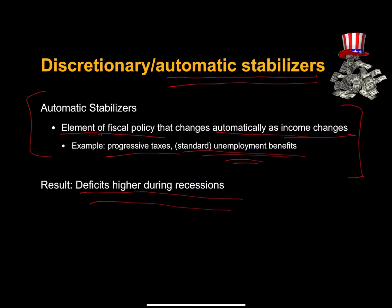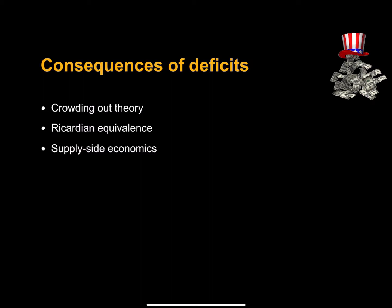Coupled with discretionary policy, our deficits can get quite high during recessions. Deficits aren't costless — there are consequences. One of the key problems with deficits is crowding out, which we're going to address. We're also going to talk about Ricardian equivalence theory and supply-side economics.